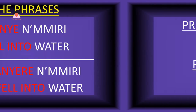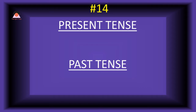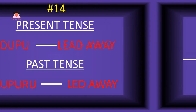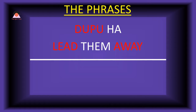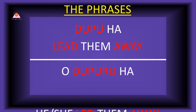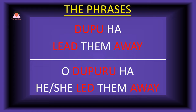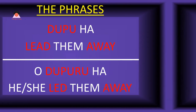Word number fourteen: 'dupu,' which means 'lead away.' The past tense of dupu is 'dupuru,' meaning 'led away.' Present tense phrase: 'dupu-ha' — lead them away. Past tense: 'o dupuru-ha' — he or she led them away.